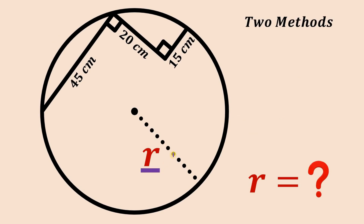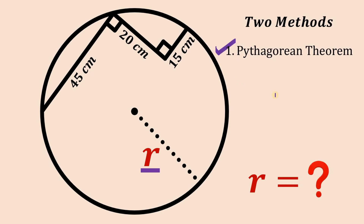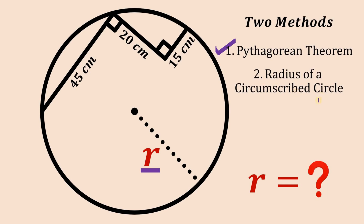The first method I will use is the Pythagorean theorem, and the second method will use the radius of the circumscribed circle — simply by using the formula: the radius equals abc all over four times the area of the triangle, where a, b, and c are the side lengths of the triangle inside our circle.